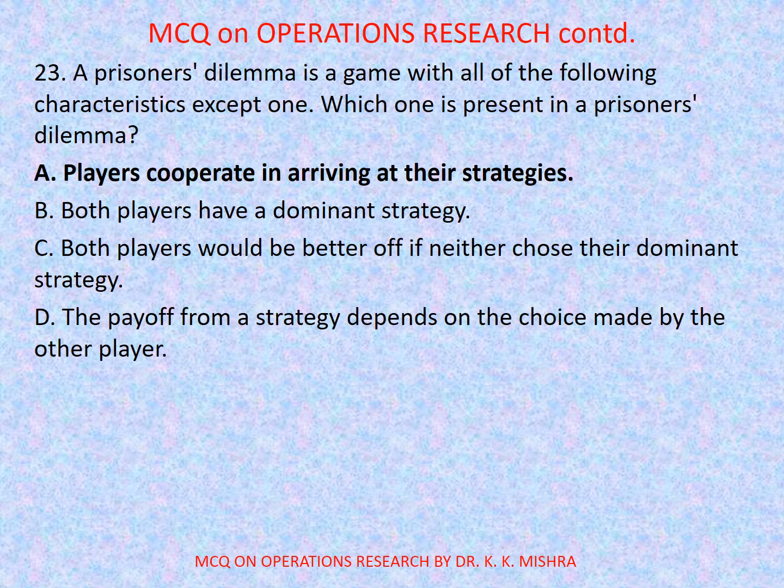Question number 23: A prisoner's dilemma is a game with all of the following characteristics except one — which one is present in a prisoner's dilemma? Options are: a) players cooperate in arriving at their strategies, b) both players have a dominant strategy, c) both players would be better off if neither chose their dominant strategy, d) the payoff from a strategy depends on the choice made by the other player. Correct option is a) players cooperate in arriving at their strategies.